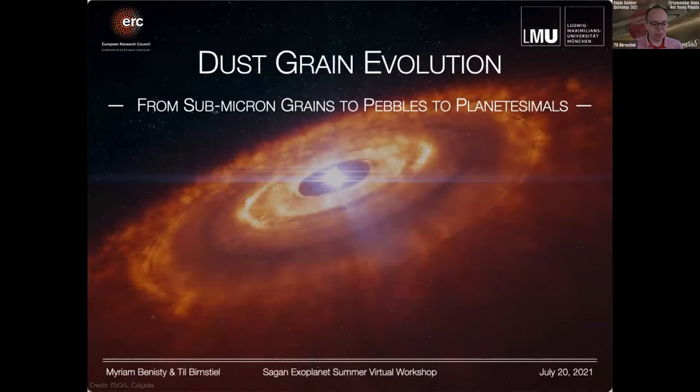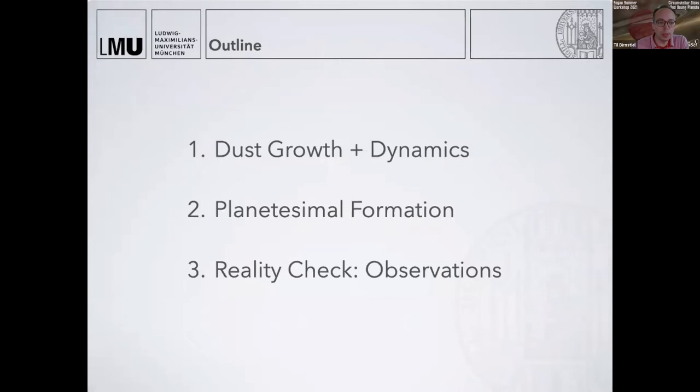Let's get started. It's going from sub-micron grains to pebbles to planetesimals, so we have a large range to cover. I'll be talking about these three points: I'll start with dust growth and dynamics, then how we think you might be forming planetesimals from that, and finally we're going to have a bit of a reality check and see what observations are telling us.